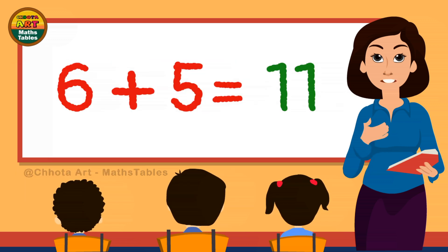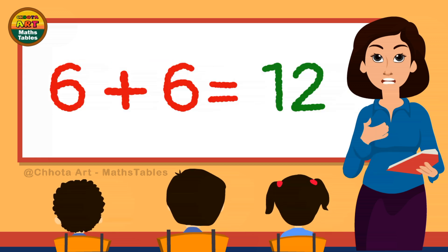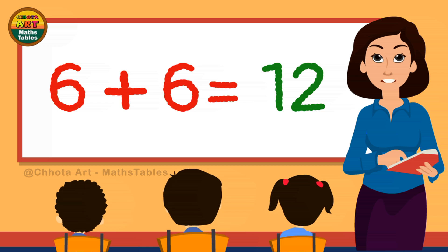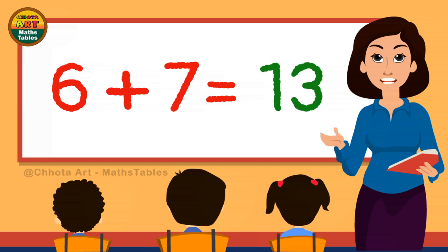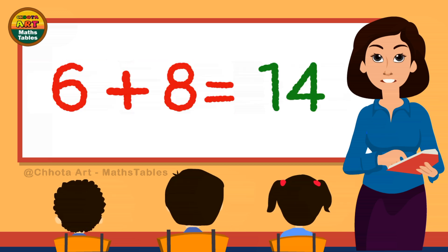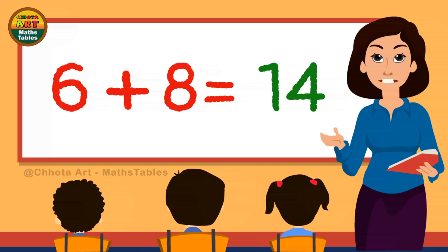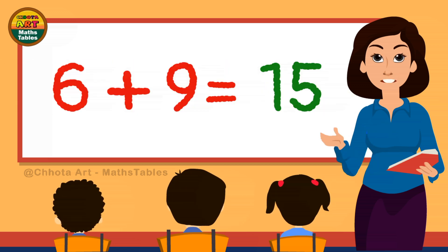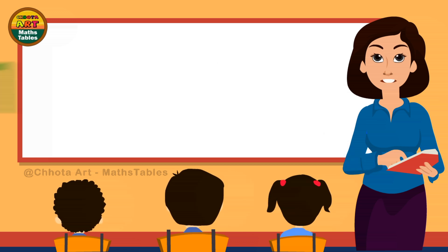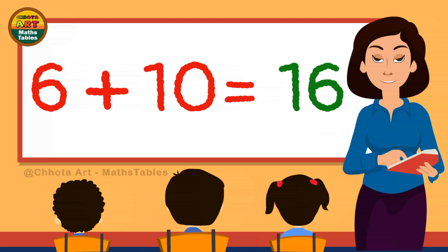6 plus 5 is 11. 6 plus 5 is 11. 6 plus 6 is 12. 6 plus 6 is 12. 6 plus 7 is 13. 6 plus 8 is 14. 6 plus 9 is 15. 6 plus 9 is 15. 6 plus 10 is 16. 6 plus 10 is 16.